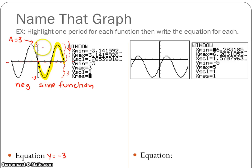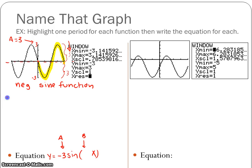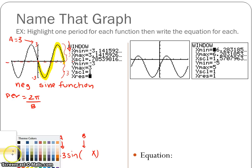A positive sine starts by going up and then down. Now I need to find my b value. The b has to do with the period, and the rule for period is 2π over b. So if the period is 2π over b, I need to see what the period is. The period is the distance it takes to make one wave along the x-axis.